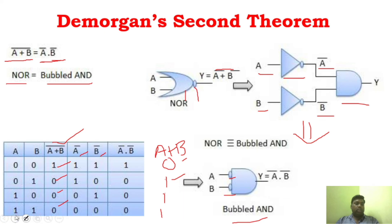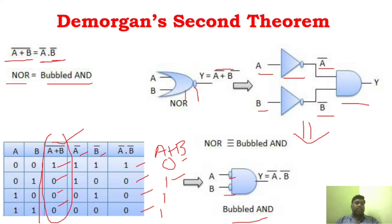Similarly, Ā: A is 0,0,1,1 so Ā is 1,1,0,0. And B̄: B is 0,1,0,1 so B̄ is 1,0,1,0. Now multiply: 1·1=1, 1·0=0, 0·1=0, 0·0=0. So Ā · B̄ is 1, 0, 0, 0. You can see that this expression equals the previous expression.